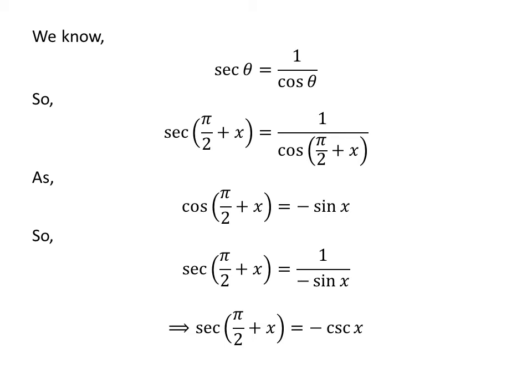We know 1 upon sine of x is equal to cosecant of x. So, secant of half of pi plus x is equal to minus cosecant of x.